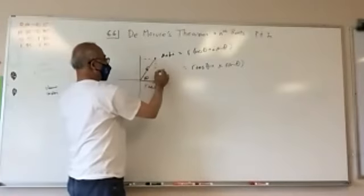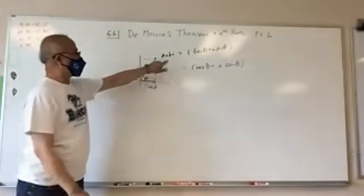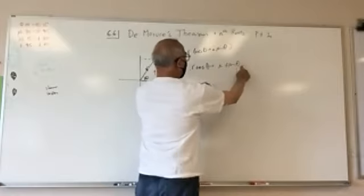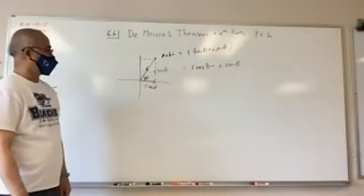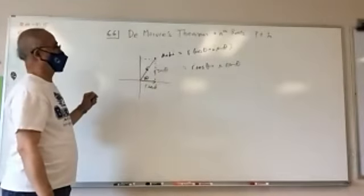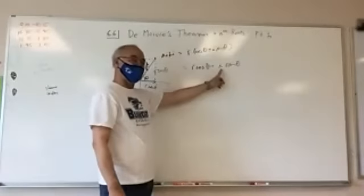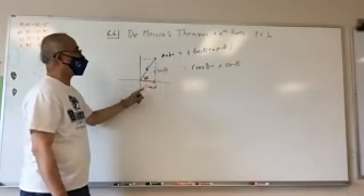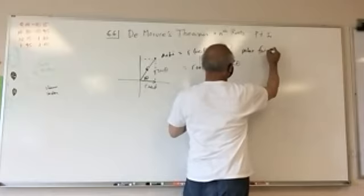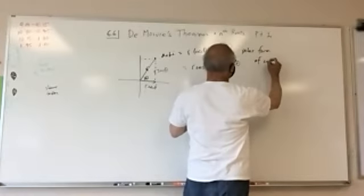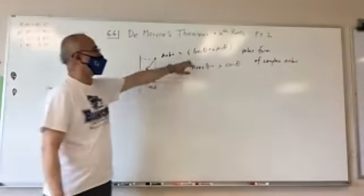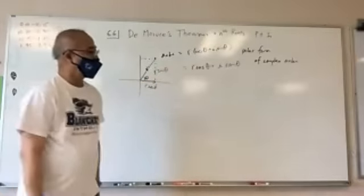This component is R sine theta, and therefore a plus bi can be represented as R cosine theta plus i times R sine theta. So this is the polar form — when I pull the R out, I get R times the quantity cosine theta plus i sine theta. This is what I call the polar form of the complex number a plus bi.